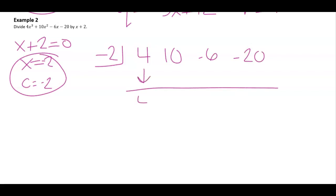And then I bring this down. 4 goes here. And then, of course, I multiply to get my negative 8. I add straight down. 2 times negative 4 gives me negative 10. Negative 10 times 2 gives me 20.